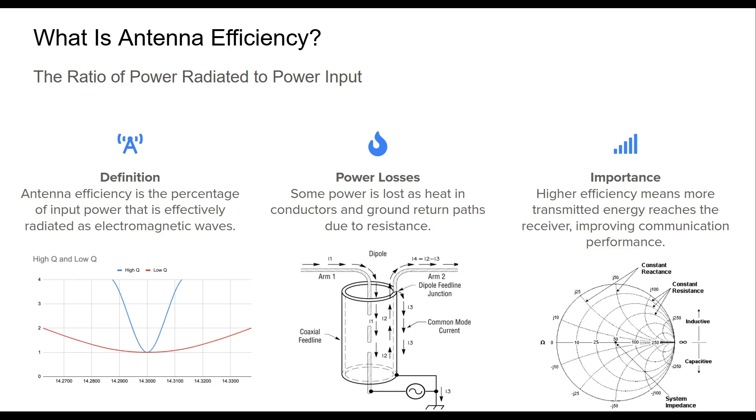Antenna efficiency is a core concept in RF design. It quantifies how well an antenna converts the power supplied by a transmitter into radiated electromagnetic energy. Not all input power is radiated. Some is lost due to various resistances. These inefficiencies can significantly impact performance, especially in weak signal environments.